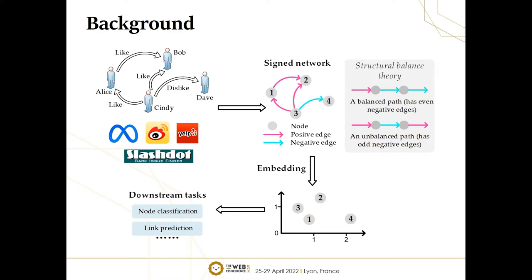Moreover, there are some special social theories based on signed networks. For example, according to the structural balance theory, if node I can easily reach node J along balanced paths, node I is supposed to have strong positive proximity to node J. And if node I can easily reach node J along unbalanced paths, node I is supposed to have strong negative proximity to node J. In many cases, signed network embedding aims to learn low-dimensional vector representations for each node such that the signed proximity information can be preserved.